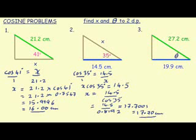In our third problem, we're required to work out the theta. We're given our hypotenuse and we're given the adjacent side. So we put cosine theta is equal to 19.9 divided by 27.2.